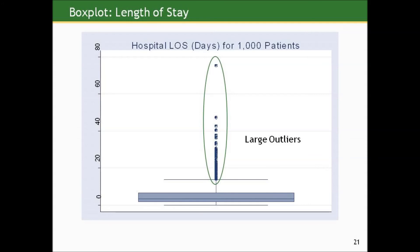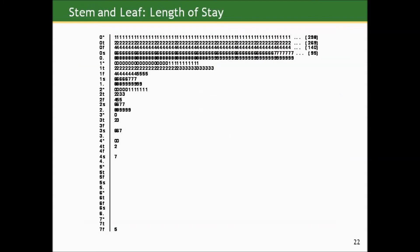For information about how the box plot determines what is an outlier and what isn't, check out the document posted on the anatomy of a box plot. We see a very different picture here — one that captures the essence of the skew seen in the histogram, that the larger values are the more extreme, most values are small, and the ones that are extreme are relatively large.